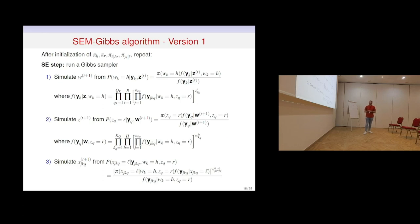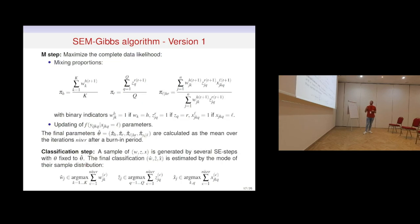The proposed algorithm works as follows: after initialization of parameters, the S-step runs a Gibbs sampler — simulating W and Z from the full conditional probabilities for the second level, specifically W from P(W_K | Y, Z) and Z using the previously simulated W value. This generates a stationary chain converging to the joint conditional probability. Then X is simulated given W and Z. The M-step updates the mixing proportions and distribution parameters. Final parameters are calculated as the mean over iterations during a burn-in period, and the final classification is estimated as the mode of the sampled distribution.